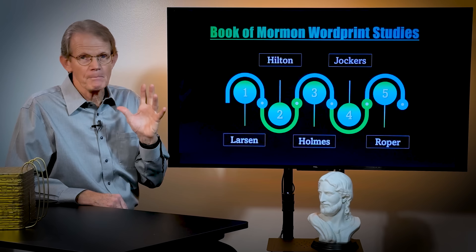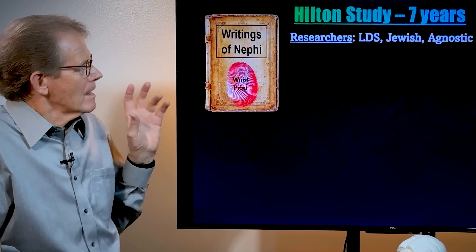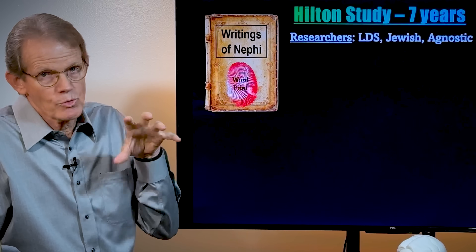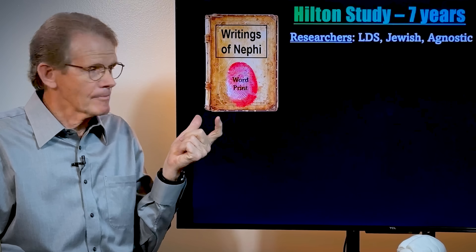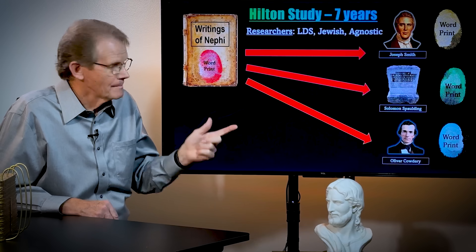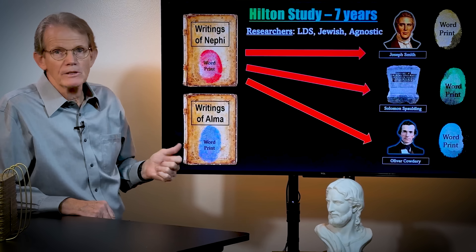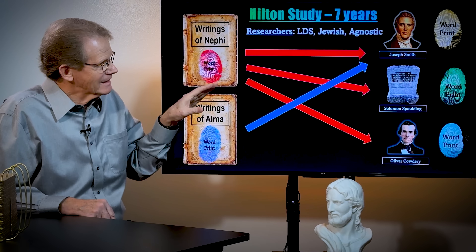Let's talk about word print studies that have been done on the Book of Mormon. There have been five. You can read about all five in the footnotes, but we're going to focus on the Hilton study. The Hilton study was fascinating. Over a period of seven years, they did word print studies, and it wasn't just LDS researchers — the researchers were LDS, Jewish, and agnostic. They took the writings of Nephi, one of the prophets in the Book of Mormon, established his word print, then compared it with the word print of Joseph Smith, Solomon Spaulding, and Oliver Cowdery. Then they took another prophet named Alma, established his word print, and did the exact same thing.